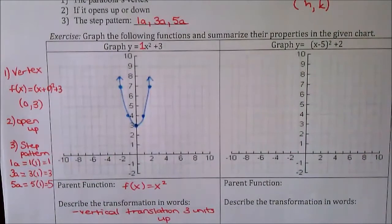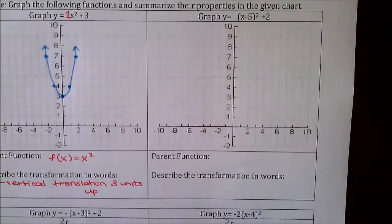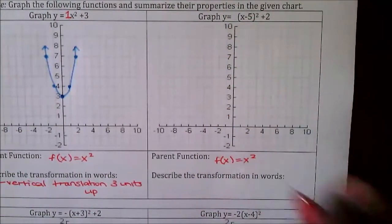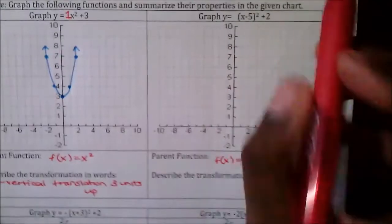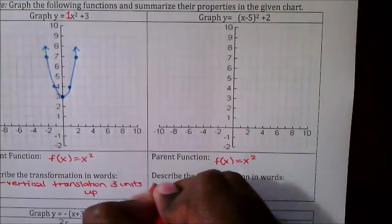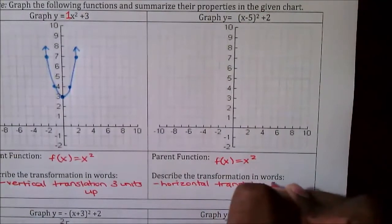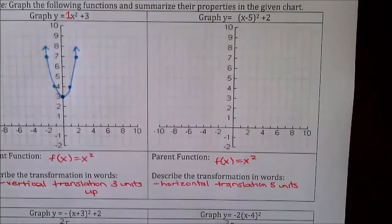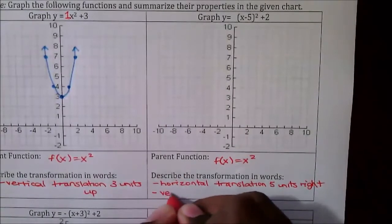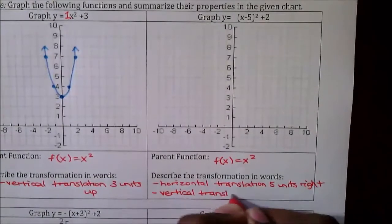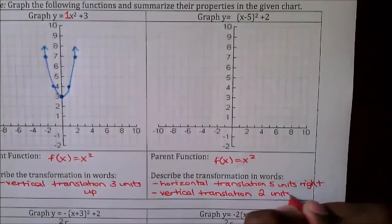Let's take a look at the second question: graph y = (x − 5)² + 2. Once again, our parent function is f(x) = x². We've made two transformations to this parabola. The h value gives a horizontal translation — remember it's the opposite, so the negative indicates a shift of five units to the right. And the k value tells us we have a vertical translation two units up.